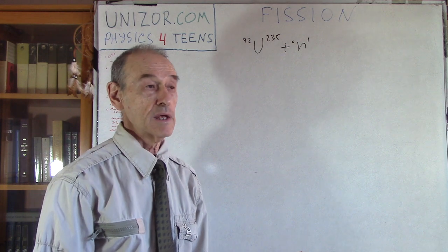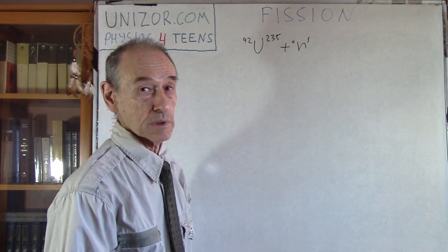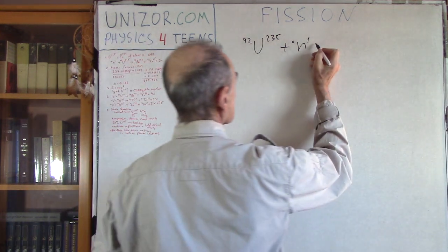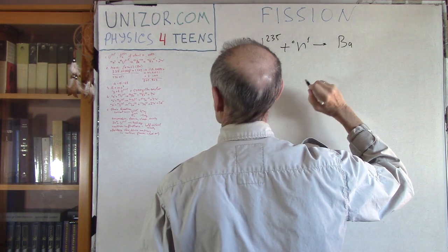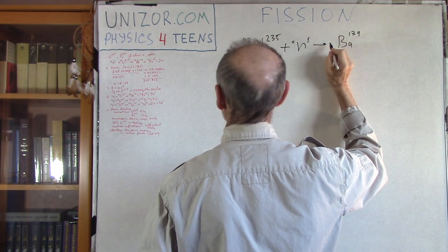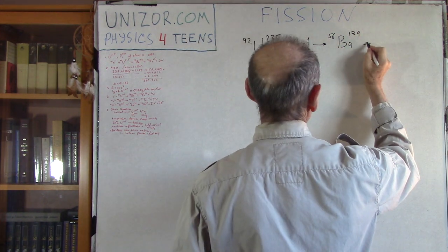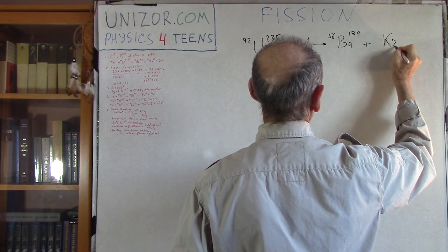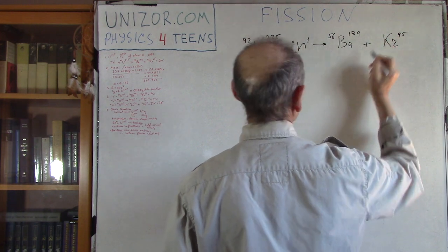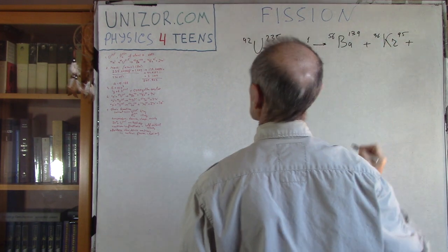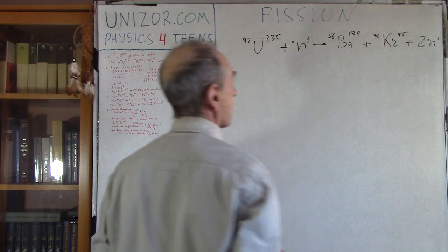Not exactly equal halves, and not exactly always the same way, but it splits somehow. One of the possible splittings is as follows: it produces barium, which has 139 atomic number and 56 protons, plus krypton, 94 atomic number and 36 protons, plus 2 or 3 neutrons.